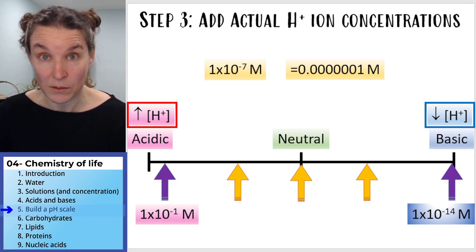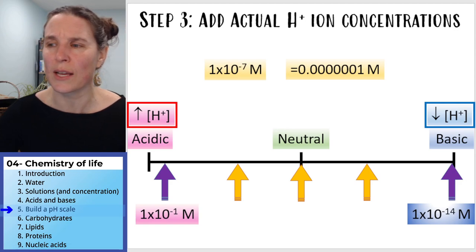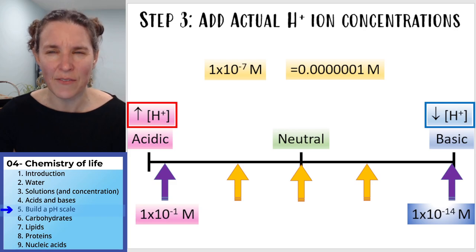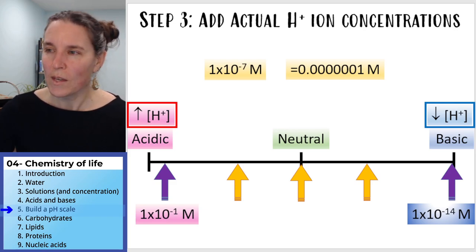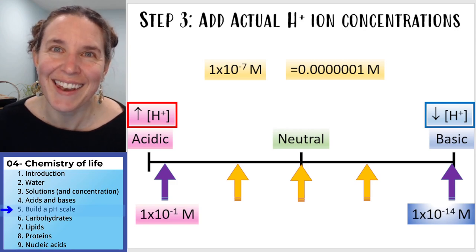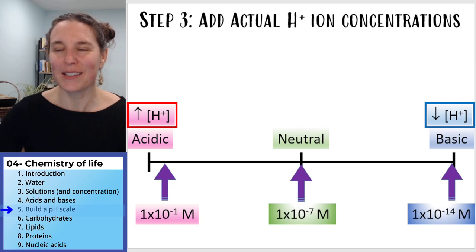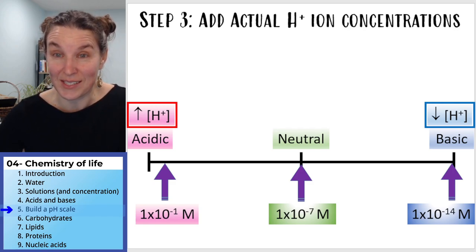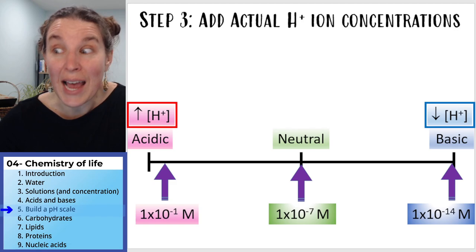What does that mean about 1×10⁻⁷? Where would you put it? You have three options: right in the middle at neutral, between neutral and acidic, or between neutral and basic. Where do you think the seven is going to end up? It does indeed go at neutral — seven.